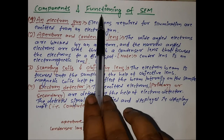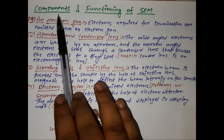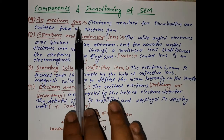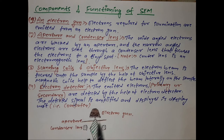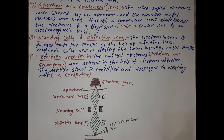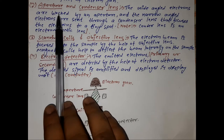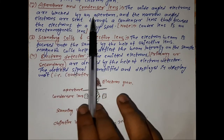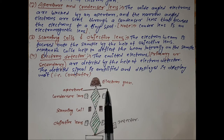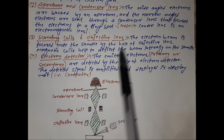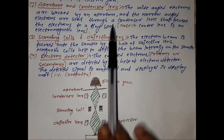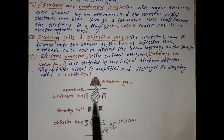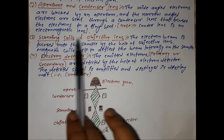The first component of SEM is the electron gun — electrons required for illumination are emitted from it, as seen in the figure. The next components are the aperture and condenser lens. The aperture blocks wide-angled electrons, and the narrow-angled electrons are sent through a condenser lens that focuses them to a tiny spot. The condenser lens is an electromagnetic lens.